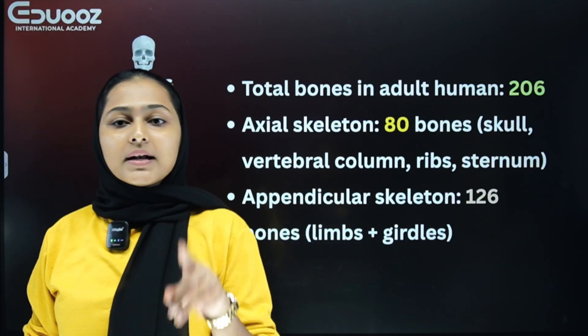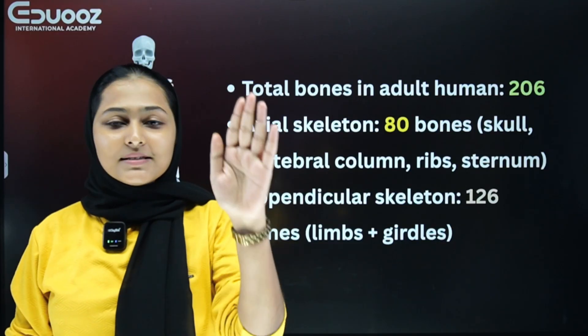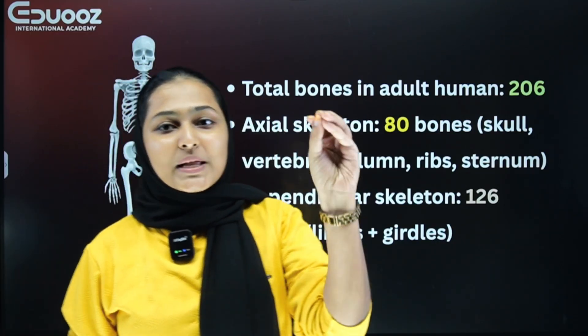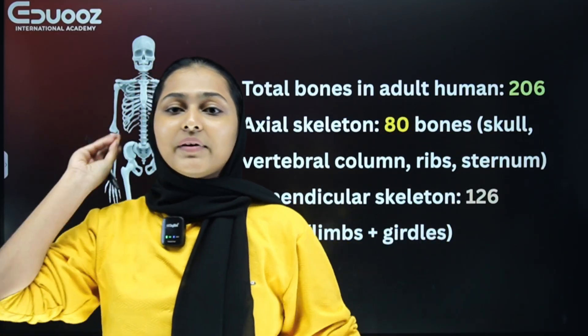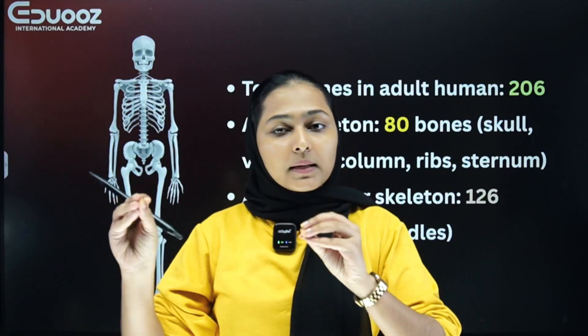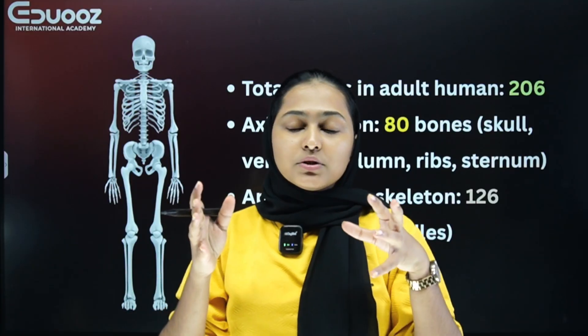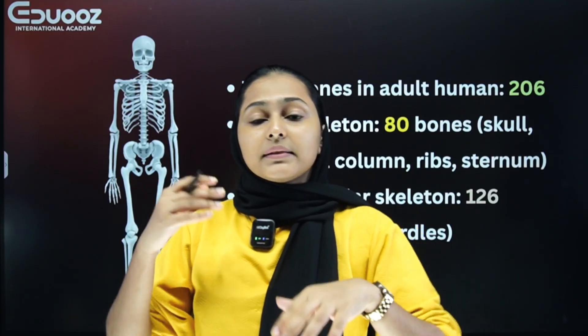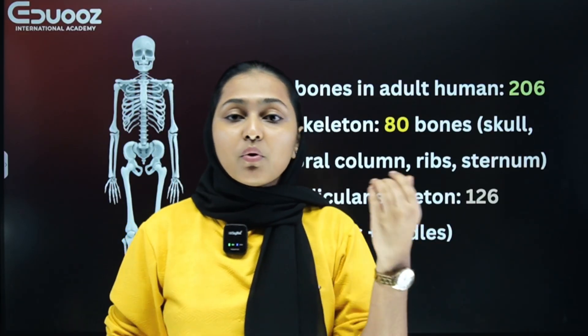Next, we will look at the appendicular skeleton. The appendicular skeleton has 126 bones. We will look at the actual skeleton region by region, examining each bone and its number.